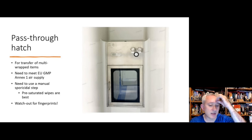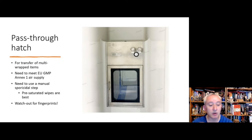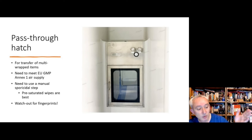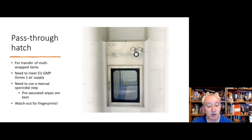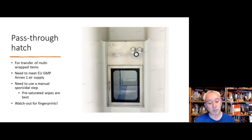Pass-through hatches are used for multi-wrapped items, often sterile items. The important principle is that all items going into an aseptic area are triple-wrapped, so layers can be removed successively through different clean room grades. We must be particularly concerned because contamination can arise from the external environment through surface cross-contamination and also from people — particularly via fingerprints from gloved hands.